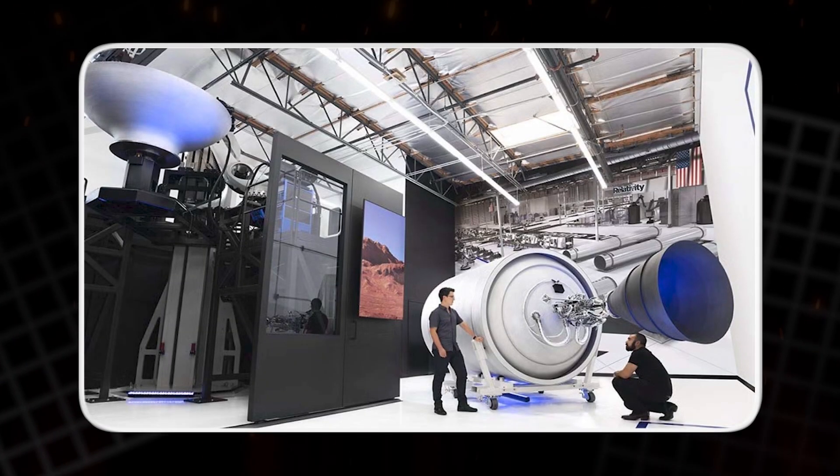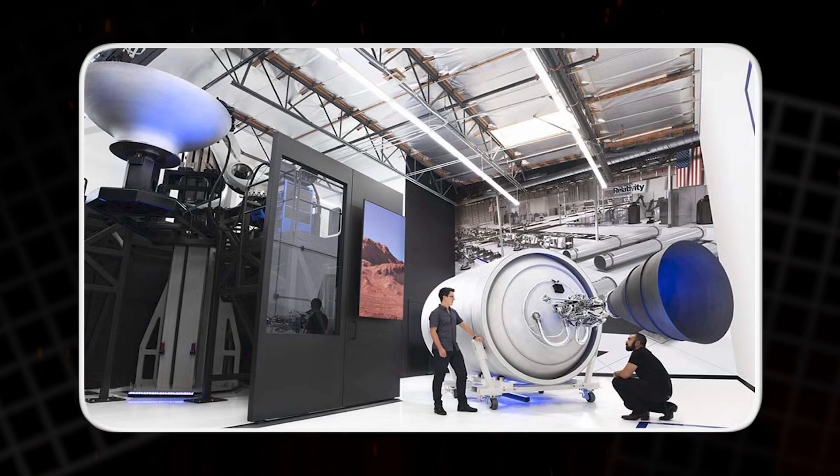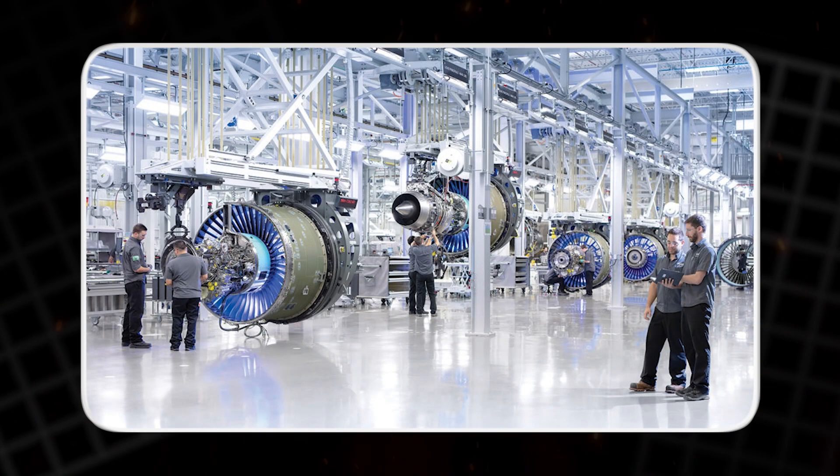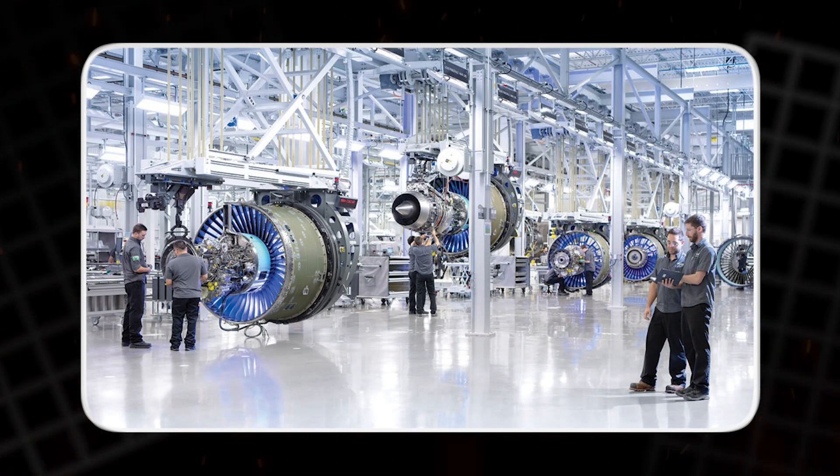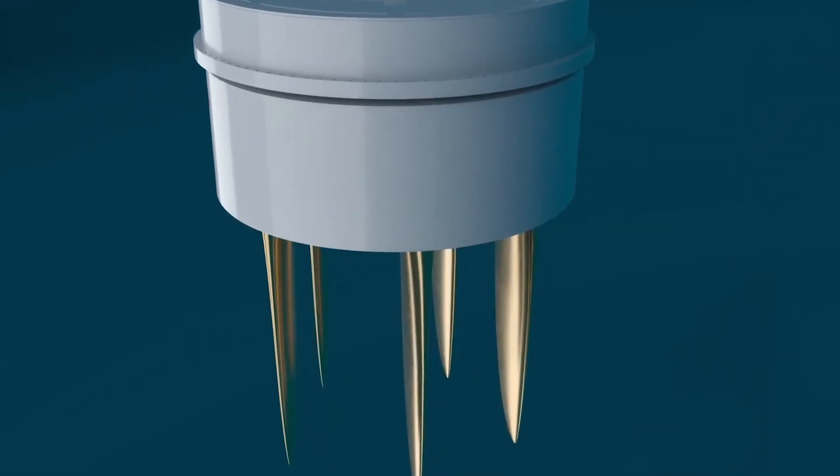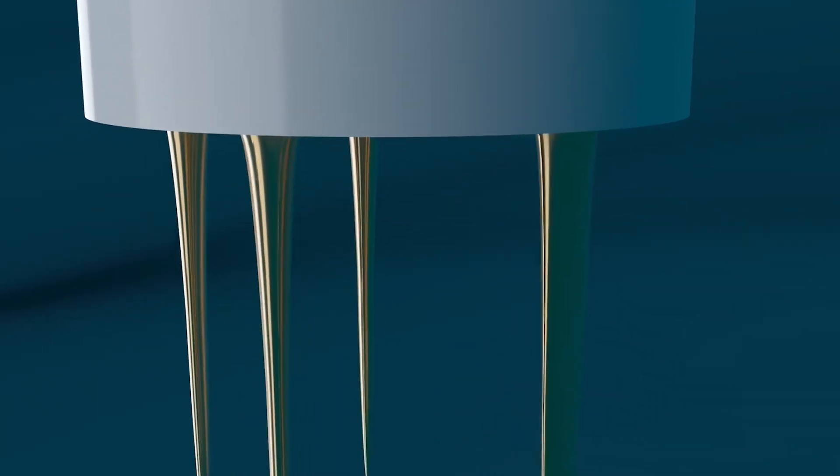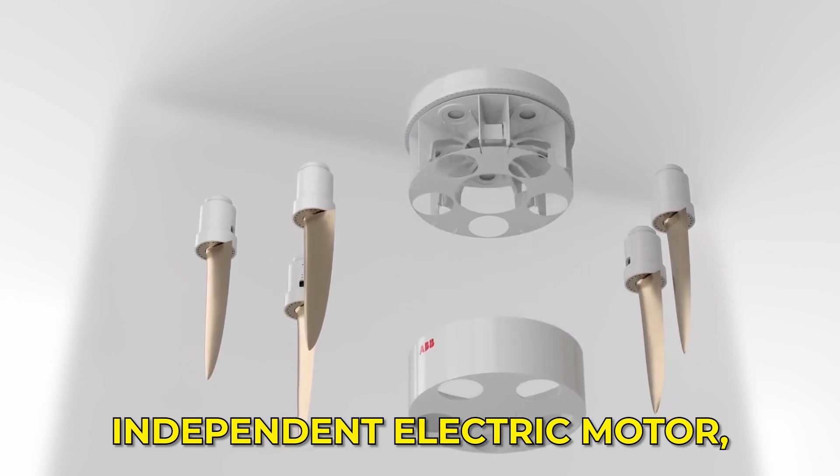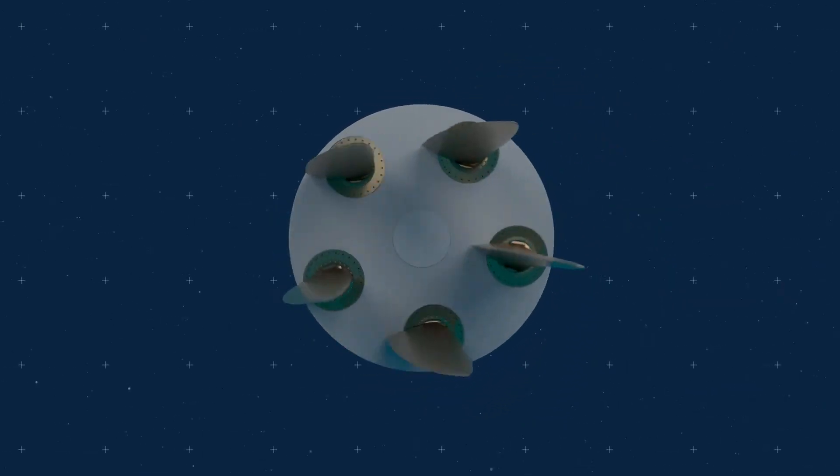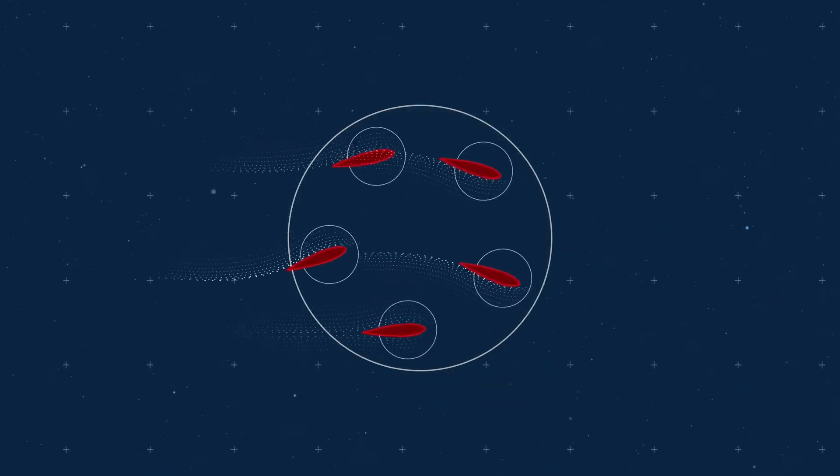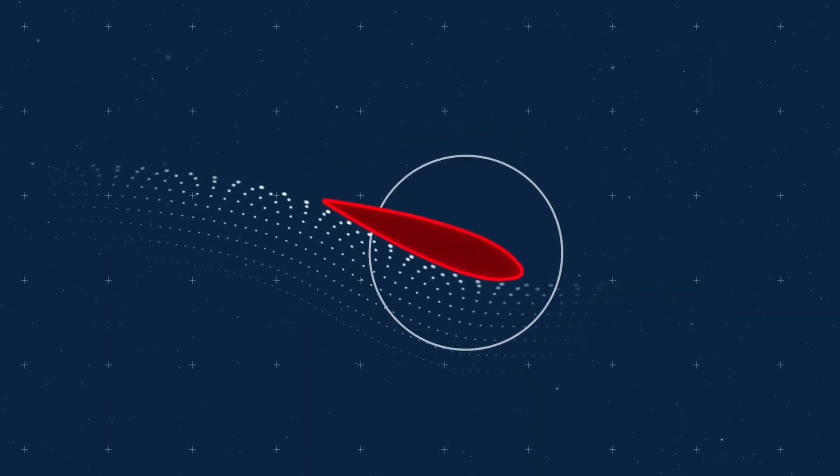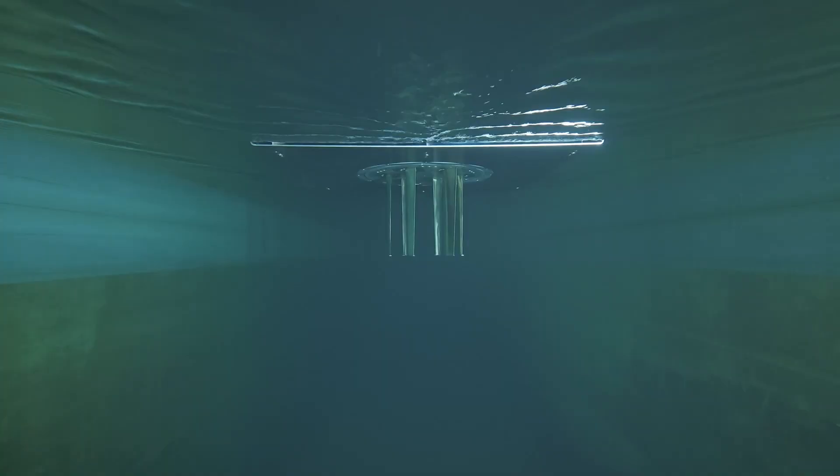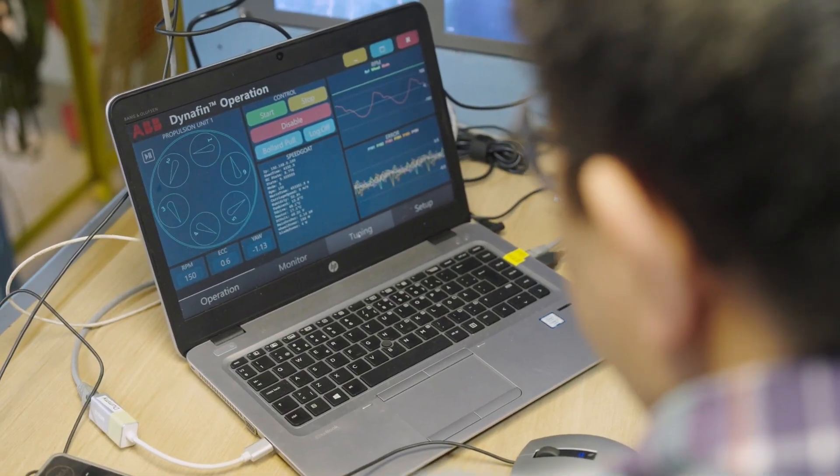This process is similar to what aerospace companies do when designing 3D-printed rocket engines, testing hundreds of designs virtually until they find the most efficient one. Thanks to this approach, ABB's system achieved something remarkable. Each blade in their prototype has its own independent electric motor, allowing for real-time adjustments of pitch and thrust angle. This gives the system a reported efficiency of around 80%, which is incredibly high for a propulsion mechanism that doesn't rely on fixed geometry.